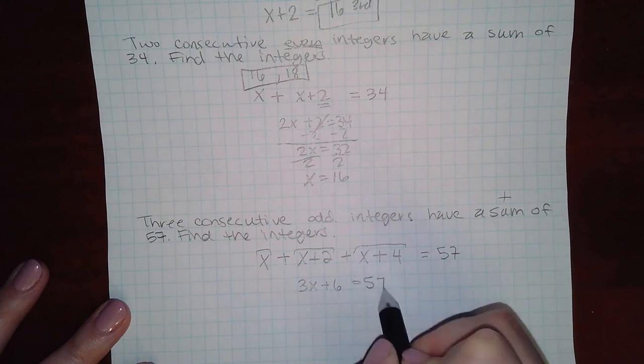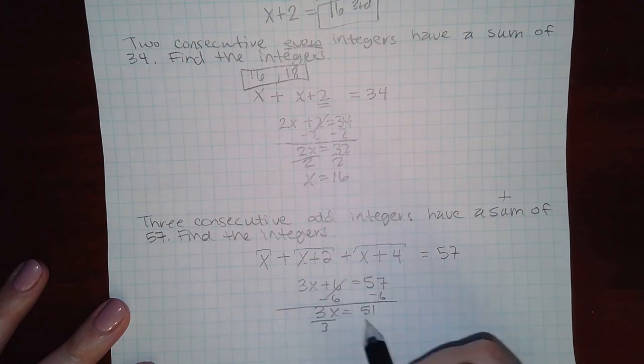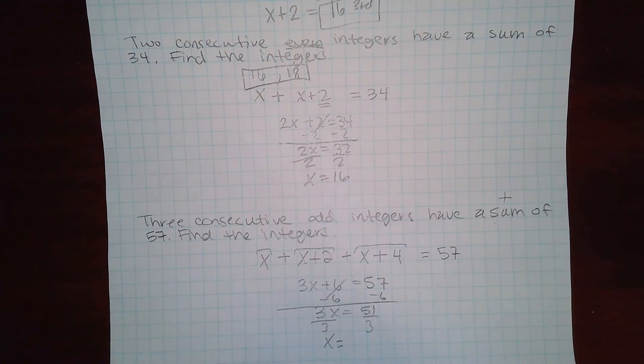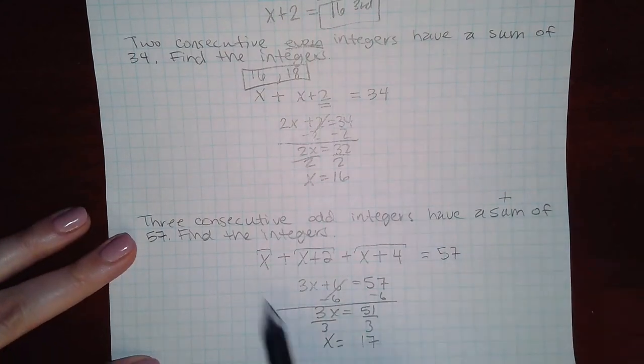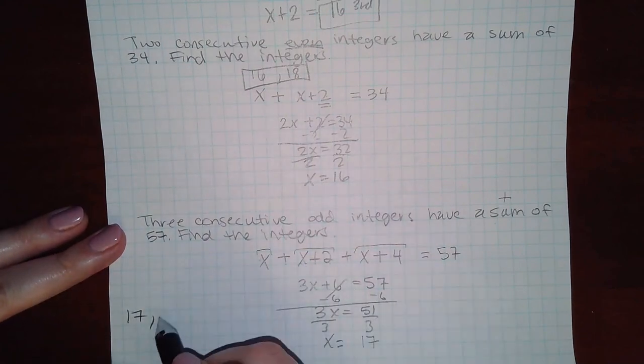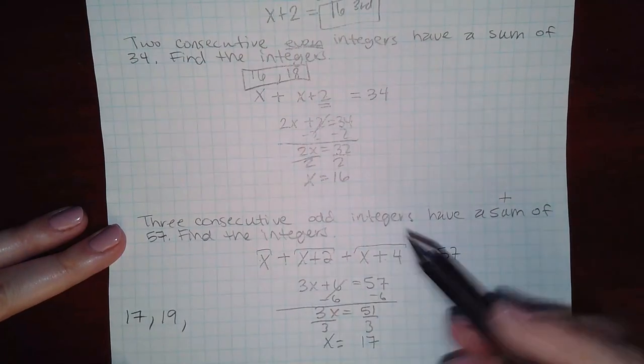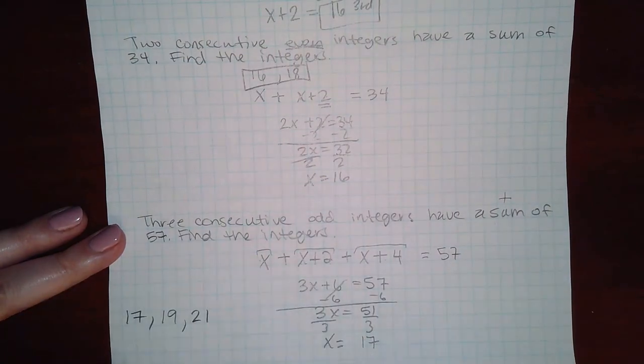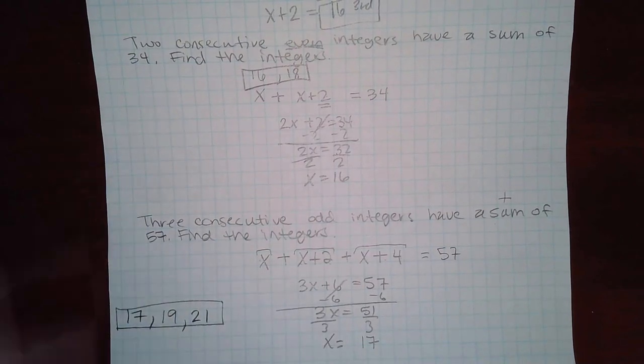3x equal to 51, x equal to 17. That means the first number is 17, 17 plus 2 which is 19 is the second number, and then 17 plus 4 is 21, that's the next odd number. So there are your three integers.